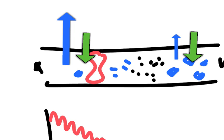So at the arterial end, the hydrostatic pressure is greater than the osmotic pressure — the hydrostatic pressure forces fluid out, though there's still osmotic pressure dragging it in, it's just overcome. At the venous end, the osmotic pressure dragging the tissue fluid back into the plasma is greater than the hydrostatic pressure forcing it out.